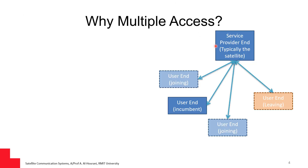Why do we need multiple access? You would like to utilize the satellite as efficiently as possible, and you want to use the spectrum as efficiently as possible. Individual user traffic is not constantly flowing — not everyone is watching videos at the same time with the same rate. Some users are browsing the internet, some are using video calls, some are streaming, and so on.